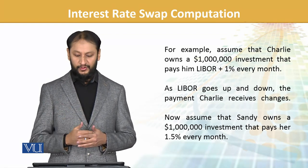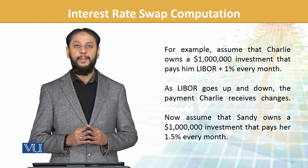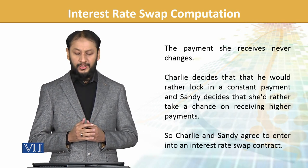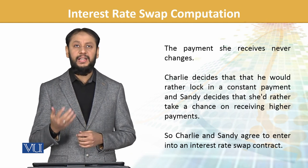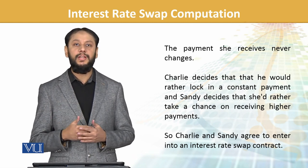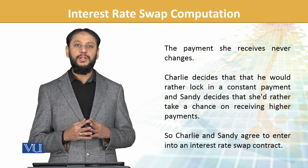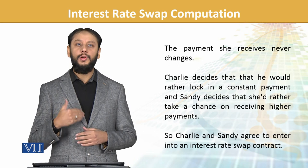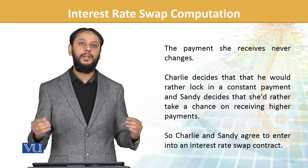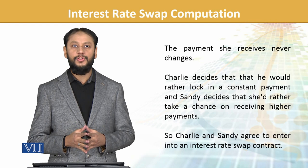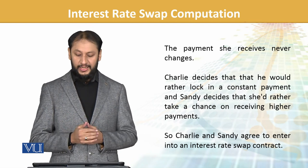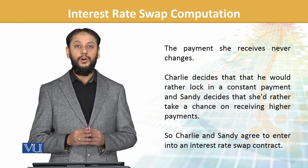Sandy's fixed investment pays 1.5% per month and the payment she receives never changes because it is a fixed stream. Charlie decides he would rather lock in a constant payment, and Sandy decides she would rather take a chance on receiving a higher return. They want to deviate from their current positions — Charlie wants to go from floating to fixed, and Sandy from fixed to floating. One option is they can swap, so Charlie and Sandy agree to enter into an interest rate swap contract.